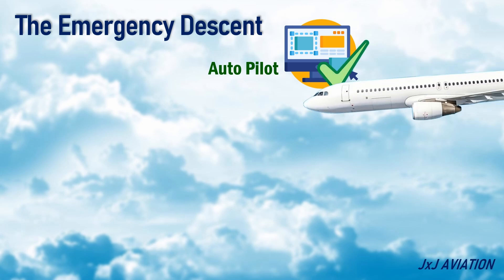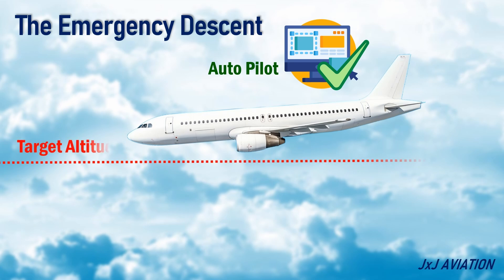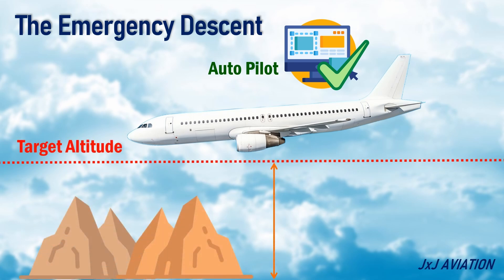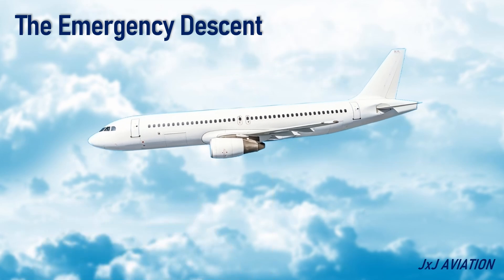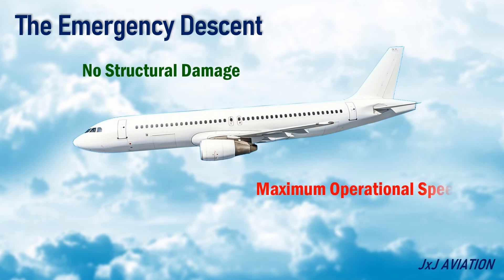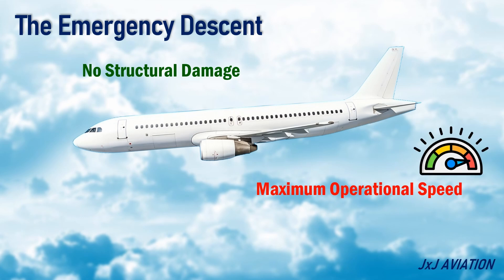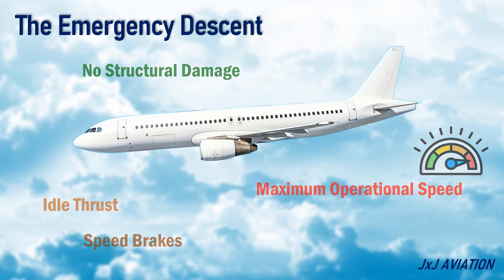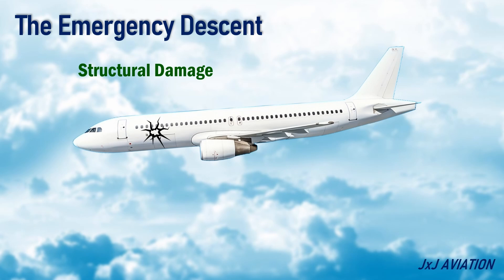A safe, suitable target altitude should be set, as defined for a particular route. This altitude would normally be 10,000 feet. If there is no structural damage, the aircraft can be made to descend at its maximum operational speed. The thrust should be at idle and speed brakes should be extended. In case of any structural damage, the aircraft should continue flying at the indicated airspeed when the failure occurred.